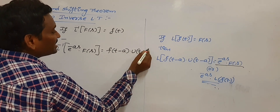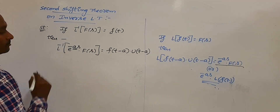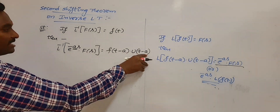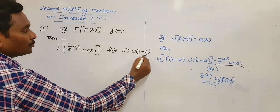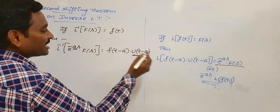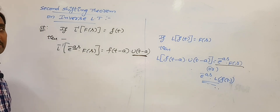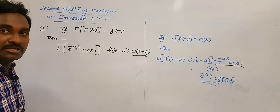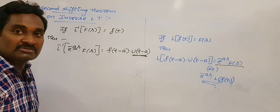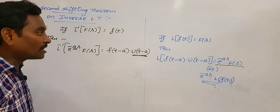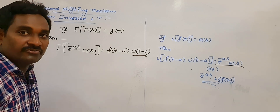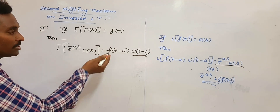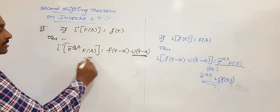Here, a is any real number. You should write this a in both places — in f(t−a) and in u(t−a). Here, u(t−a) is known as the unit step function. I have already explained what the unit step function is in the chapter of Laplace transform. If you have not seen that, please watch that video once, and then you can understand this easily.